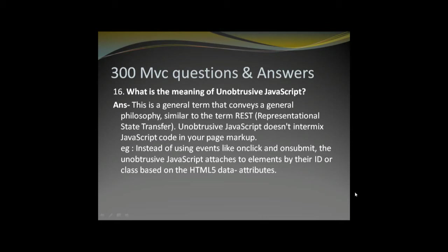In obtrusive JavaScript you write event handlers like onclick directly in the page markup. But in unobtrusive JavaScript, you select the element by taking the ID of the control and attach the event handler externally.